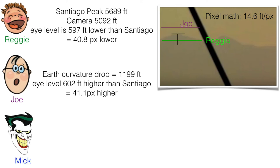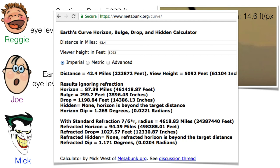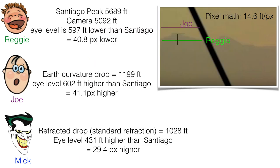And now Mick. Mick says the earth is a globe, but he likes to use standard refraction as an estimate. So he used Metabunk. He actually put in an accurate viewer height, and he's just going down there to the bottom to where it says refracted drop. So the refracted drop is 1,028 feet. So if you do the pixel math, then his eye level will be 29.4 pixels higher than Santiago peak. So there in blue is Mick's estimate for eye level.